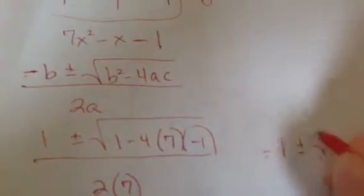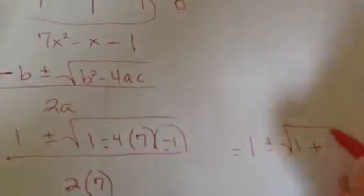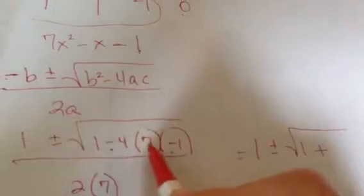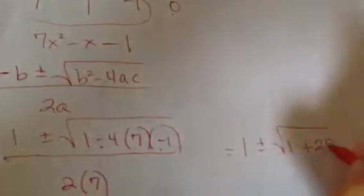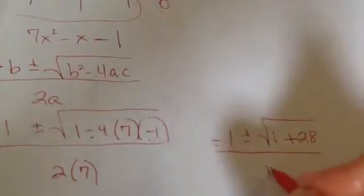That's going to give me 1. This, I've got two negatives, so I can see I'm going to be adding. And 4 times 7 times 1 is 28. All over 14.